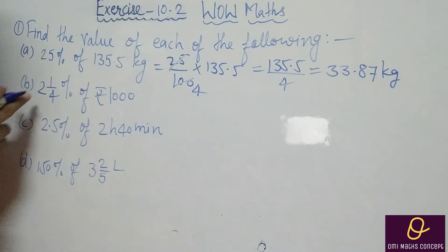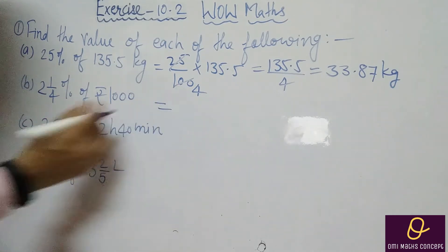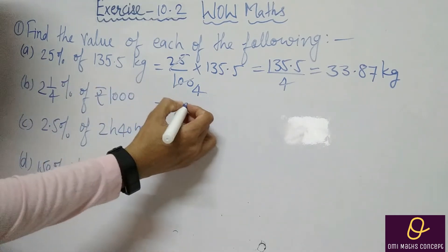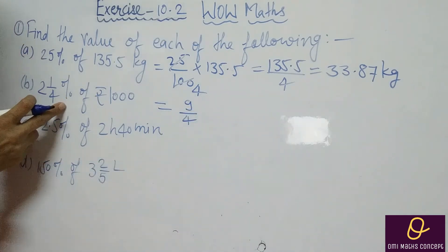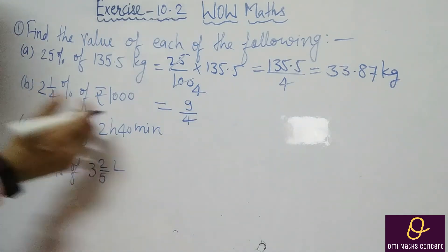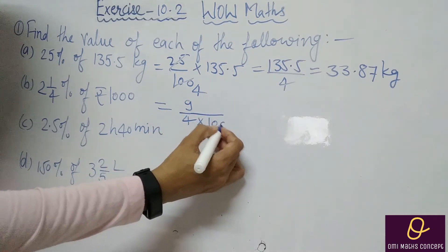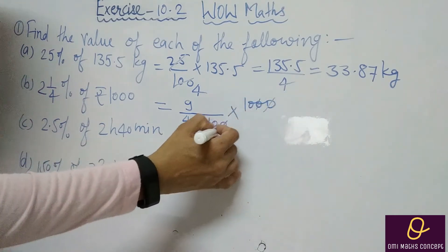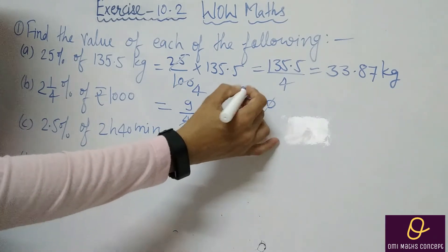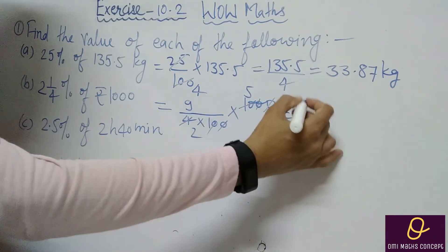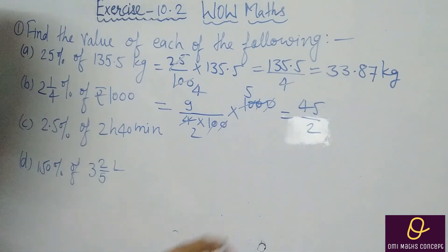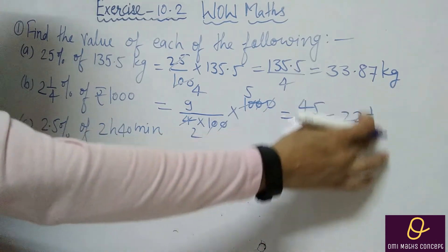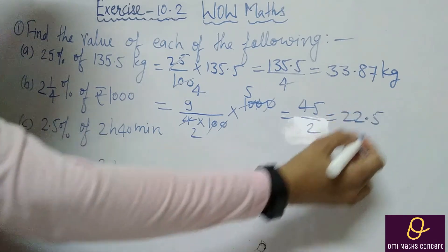Now let's see Part B: 2¼% of ₹1000. First we will change the mixed fraction to an improper fraction: 4×2 is 8, plus 1 is 9, so 9/4. To remove the percentage, divide by 100, then multiply by 1000. After cancellation, we divide and get 1/2, which in decimal is 0.5 rupees.